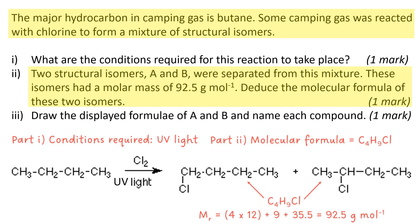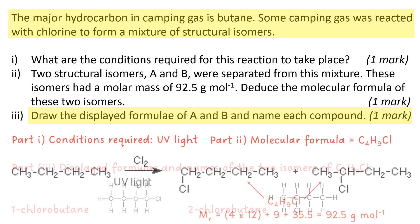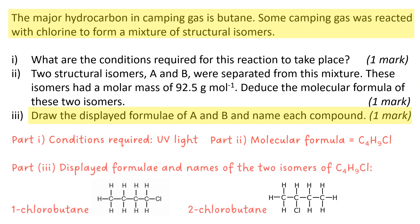Now what you should do is put down the displayed formula of A and B. We convert the formula into a displayed formula, making sure that all of the bonds are populated with atoms and every atom is visible. That gives us 1-chlorobutane, because that's carbon number one. The chlorine could also be placed at other positions on carbon one — it doesn't matter where that chlorine goes as long as it's on carbon number one.